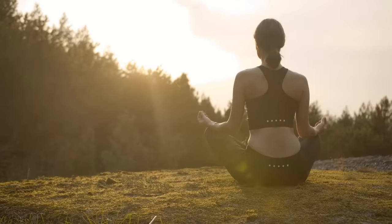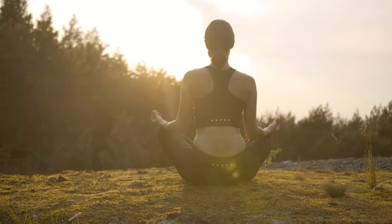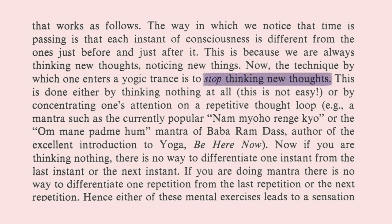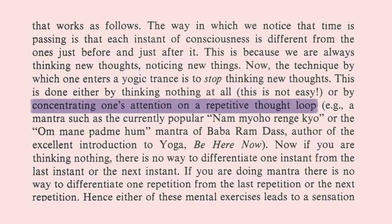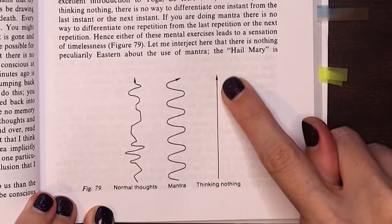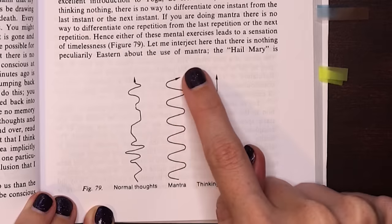He asks if there is a way to be conscious in a static space-time instead of always moving forwards. One trick to achieve the feeling of timelessness is to stop thinking new thoughts, because without that it's hard to distinguish one moment from the next. To achieve this timelessness you could either think nothing at all, which is not easy, or concentrate your attention on a repetitive thought loop like a mantra. Thinking nothing, you can't differentiate one instant from the next, and doing a mantra you can't differentiate one repetition from the next.